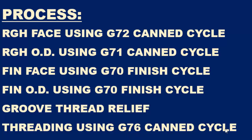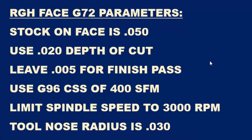Let's take a look at the G72 parameters to do the rough facing. Here you're looking at the G72 canned cycle parameters. We're going to be removing 0.050 off the face using 0.020 depth of cut. We're going to leave 0.050 for a finish pass. Don't forget to use the G96 constant surface speed with a surface feed of 400 surface feet per minute. We're going to limit the spindle speed to 3000 RPM, and the tool nose radius is going to be 30 thousandths.